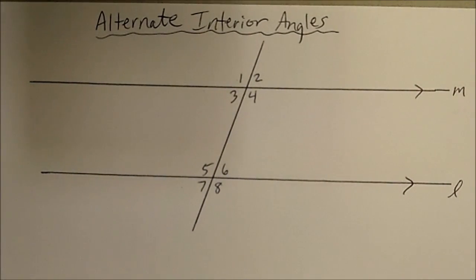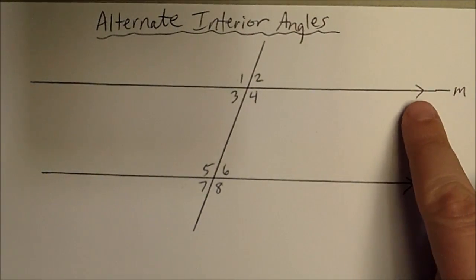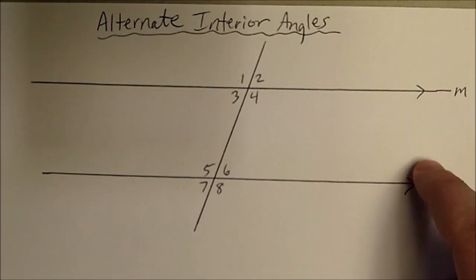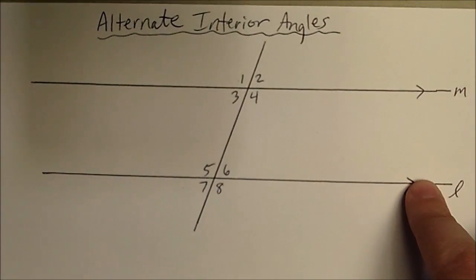Now we're going to look at alternate interior angles. We have parallel lines M and L that are parallel to each other, and we know they're parallel because they are marked as parallel.